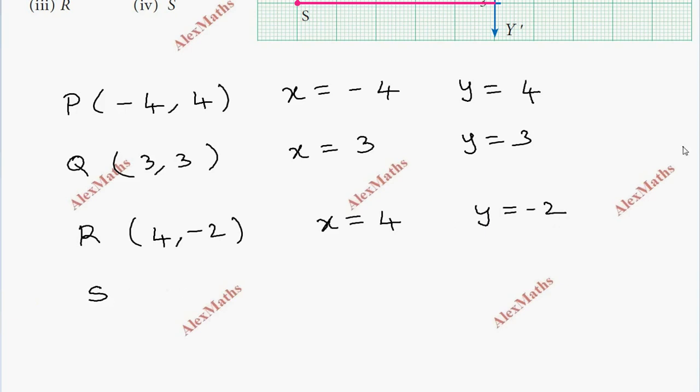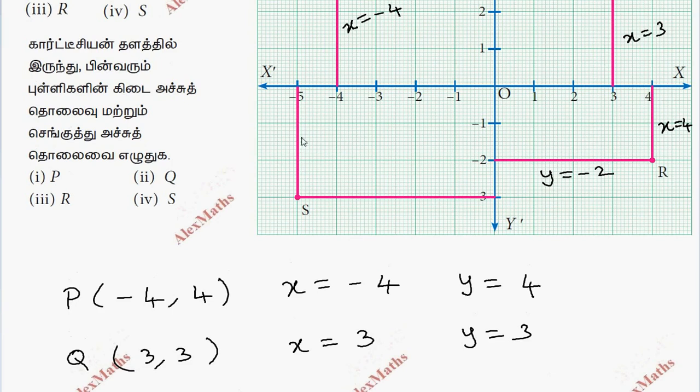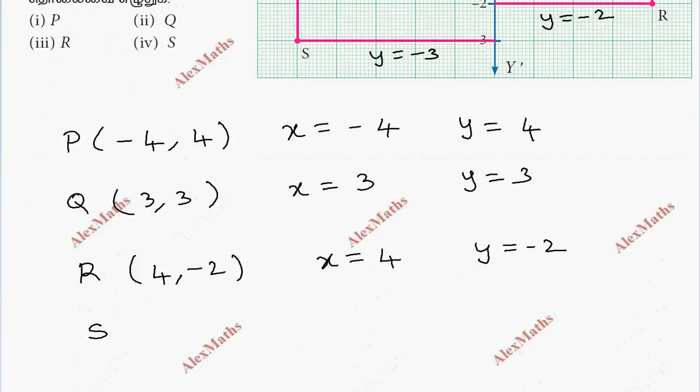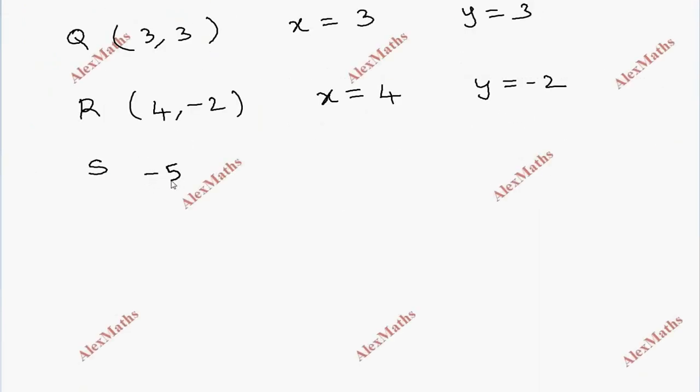Point S, you can see here on the vertical line x is equal to minus 5. On the horizontal line y is equal to minus 3. So the coordinates are minus 5 comma minus 3.